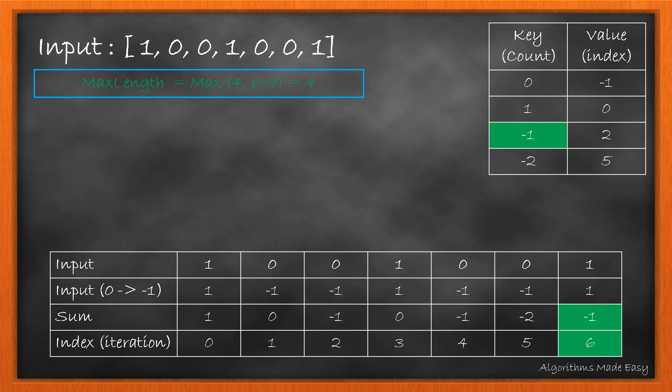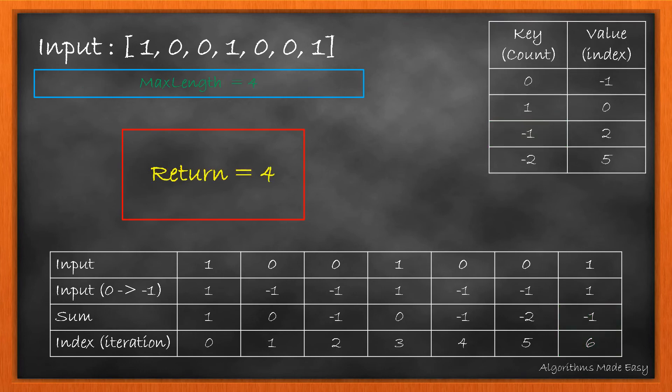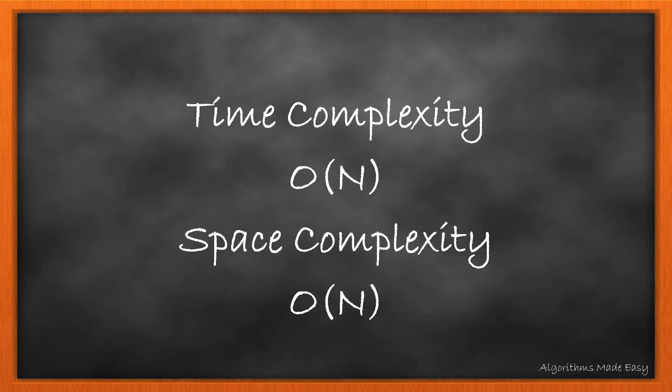Lastly, we again see the sum as –1 which is already present in the map. So we calculate the max length which is still 4. This was the last element of the input array. The time complexity of this algorithm is O(n), and in the worst case, our map will grow to size n.